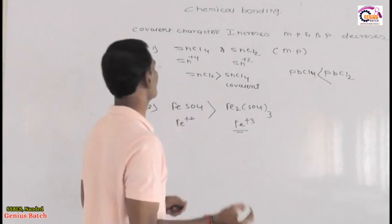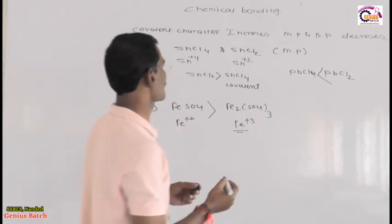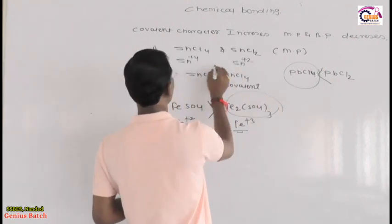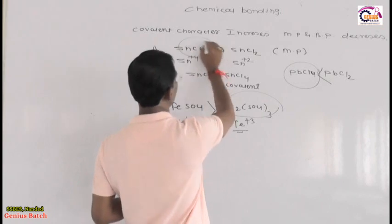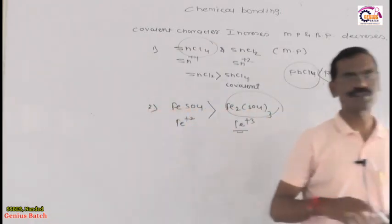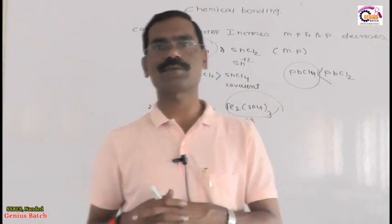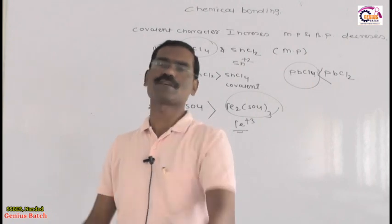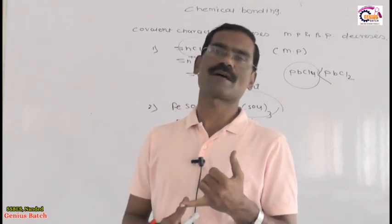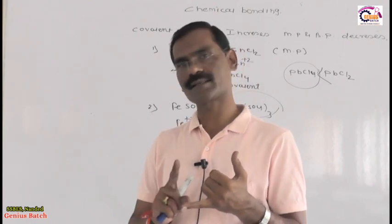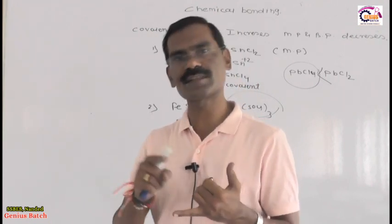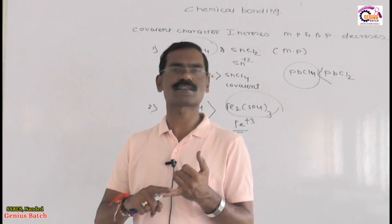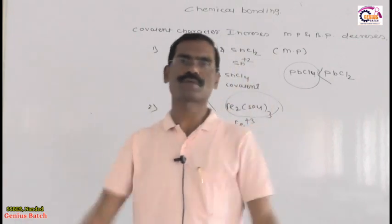Next example: PbCl₂ and PbCl₄. The melting point of PbCl₂ is always greater than PbCl₄ because PbCl₄ has more covalent character. These are the very interesting phenomena we have considered for ionic compounds. We are now completing the total part related to ionic bonds — introduction, factors affecting ionic bonds, physical properties, and polarization.